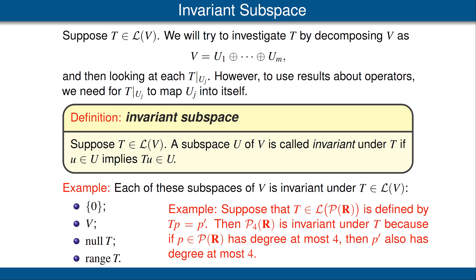Let's look at an example of an invariant subspace for a specific operator T. Our operator T is defined on the vector space of polynomials with real coefficients, where T of a polynomial p is defined to be the derivative p prime. The subspace P_4 consists of all polynomials with real coefficients and degree at most 4. This subspace is invariant under T, because if we take a polynomial with degree at most 4, then its derivative also has degree at most 4. In other words, if we have a vector in P_4(R), then T of that vector is also in P_4(R). Thus P_4(R) is an invariant subspace for T.